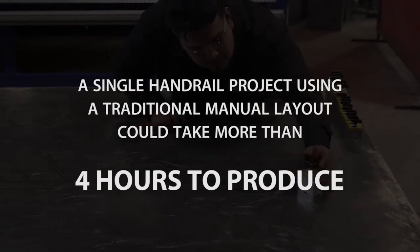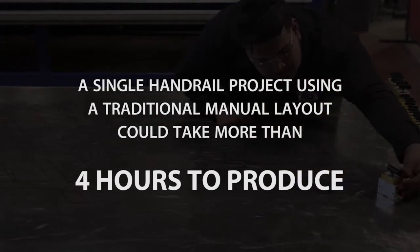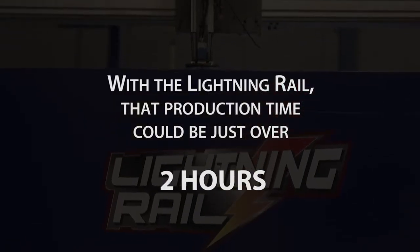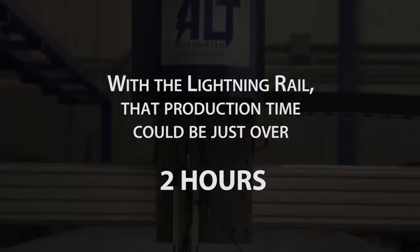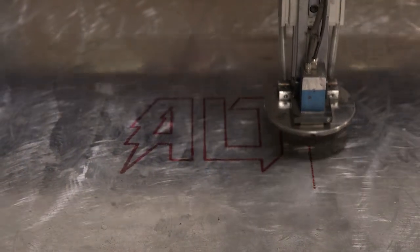As an example, a single handrail project using a traditional manual layout could take more than four hours to produce. With the Lightning Rail, that production time could be just over two hours. A more accurate product produced in less than half the time, multiplied over hundreds of handrails, adds up to a significant increase in your profits.